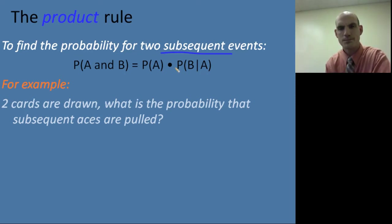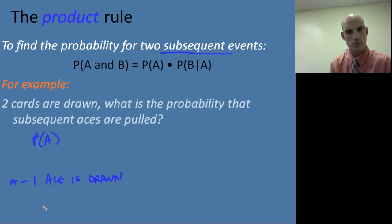So for example, if two cards are drawn, what's the probability that subsequent aces are drawn? Let's take these events individually. The probability of A, and event A is one ace is drawn. Okay? And B is one ace is drawn.